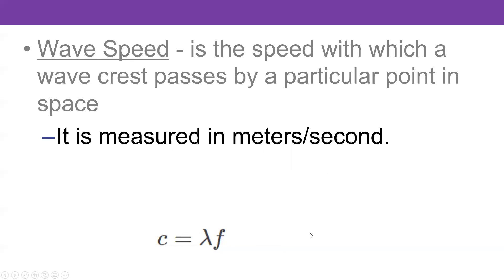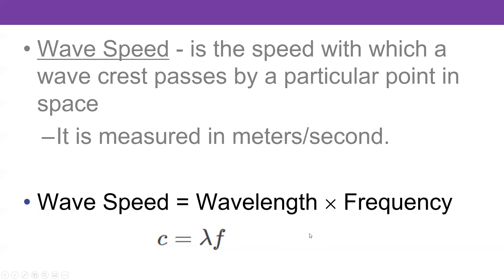In the metric system, of course, you would measure that speed in meters per second. But we could also do it in miles per hour or kilometers per second. The connection between wave speed and other things we've talked about is that C, the wave speed, is equal to the wavelength — which we indicate with lambda — and F for frequency. And the units work out: if you have lambda in meters and you have frequency in hertz, this will come out in meters per second.